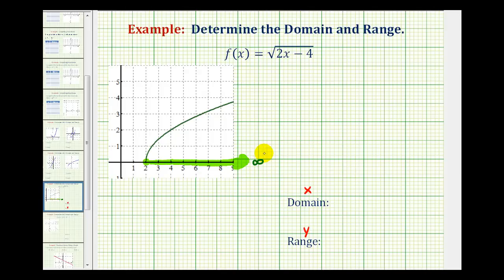And we can express this two ways. We could say that x is greater than or equal to two or using interval notation we could say the interval from two to infinity where it's closed on two or it includes two. So we have a bracket here and then a rounded parenthesis for infinity.